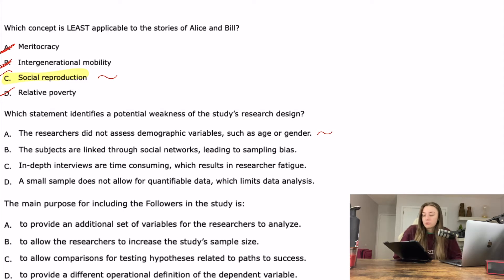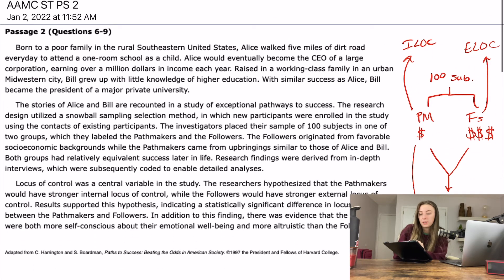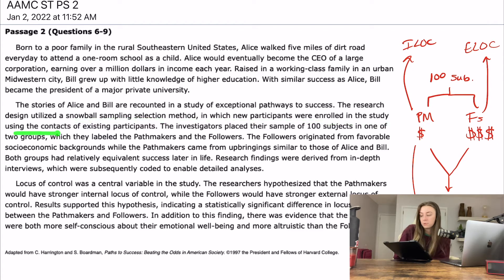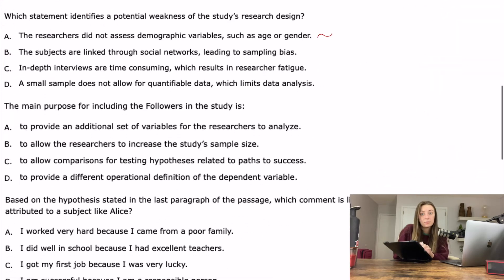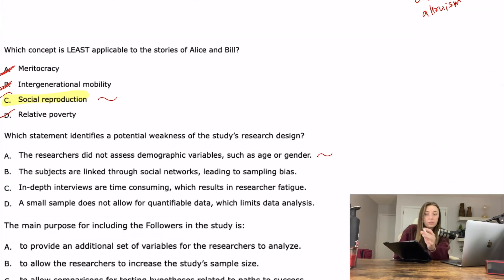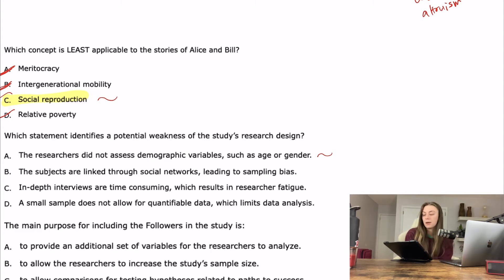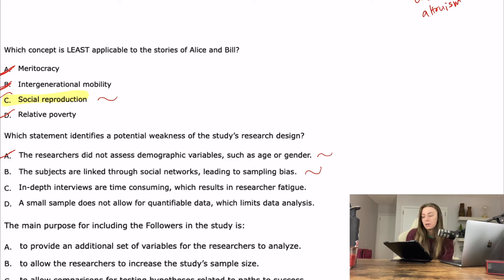Answer B: the subjects are linked through social networks, leading to sampling bias. That's where our foreshadowing came in — remember I said it was weird in the passage that it talked about the snowball sampling selection, in which participants were enrolled using the contacts of existing participants. Yeah, I can see how that would create some bias — maybe all of them kind of hang in a similar group and have similar personalities, introducing confounding variables. I actually like it better than A, so I'm marking out A.